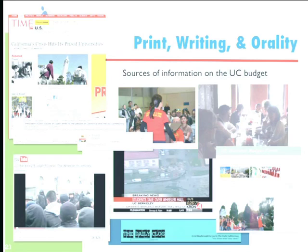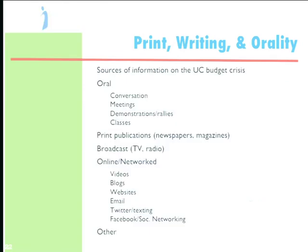If you think about the different ways in which you learned about the budget crisis — there was stuff in Time magazine, the university was sending out emails and posting things on its website, the campus paper, friends, Twitter, flyers. And also conversations and meetings and demonstrations — how many people participated in the Occupy stuff this fall? How many people here had these matters discussed in class? Print publications — anybody read about them in the Chronicle or the Daily Cal? Broadcast, TV, radio? Online? Videos, blogs — are people still using blogs? Websites, email.